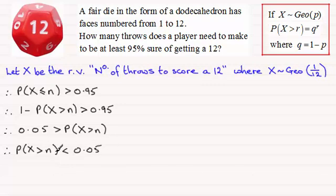So I've now got this result here, this probability. And knowing that q would be 11/12, because p is 1/12, then we've got this probability will be (11/12) to the power n, and that's got to be less than 0.05.